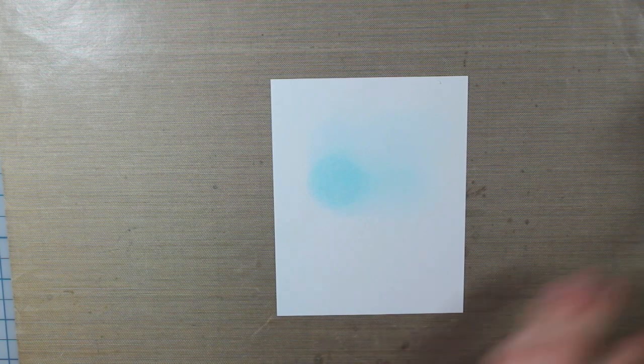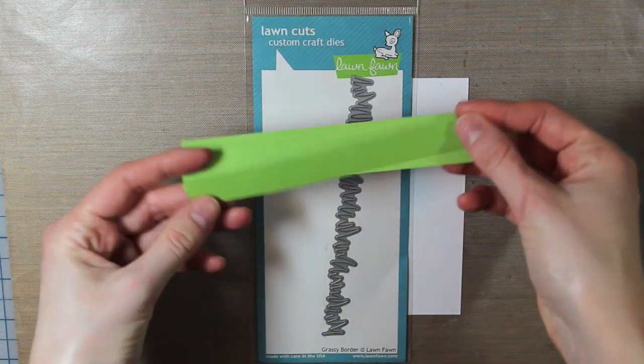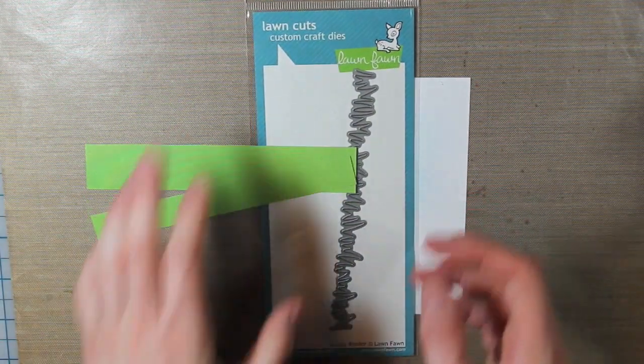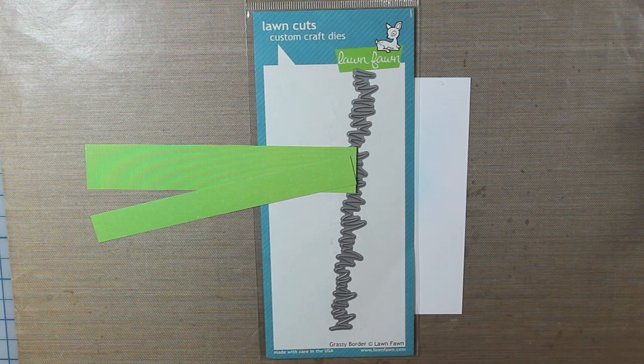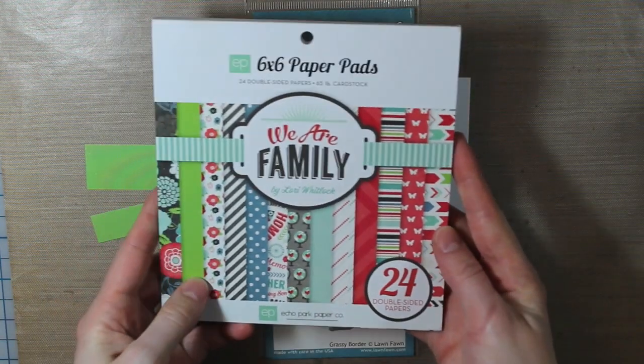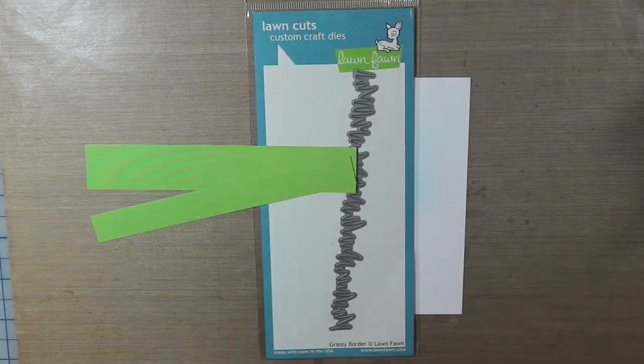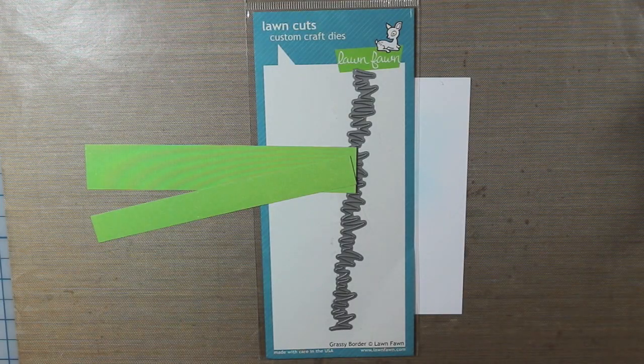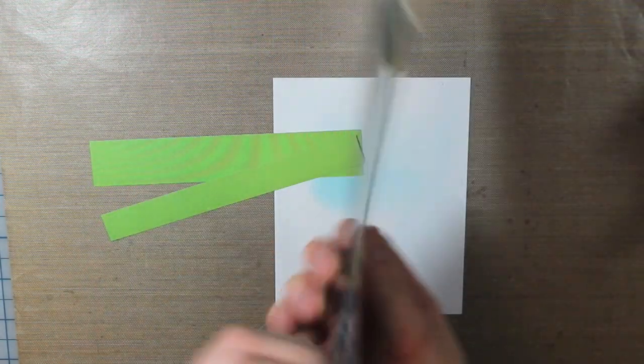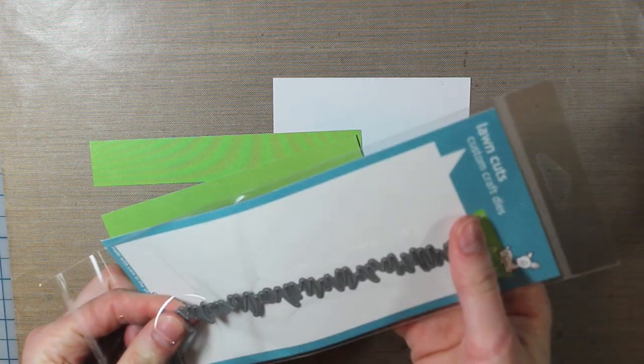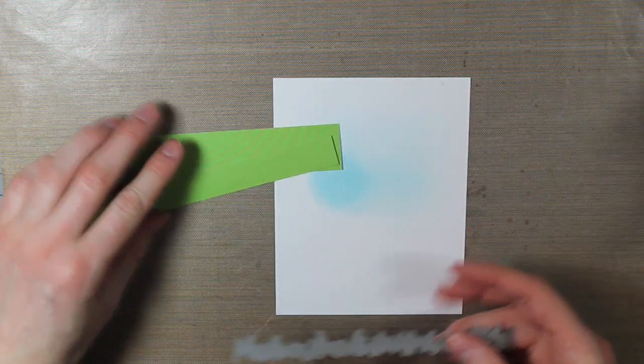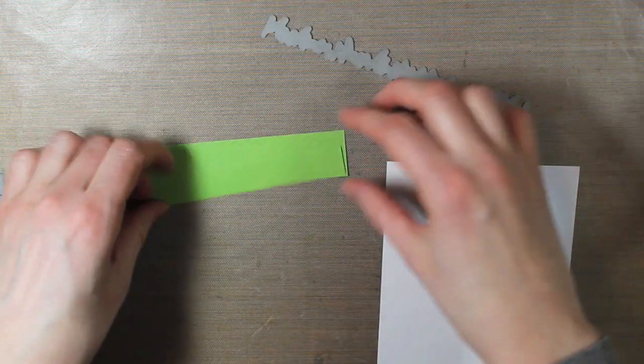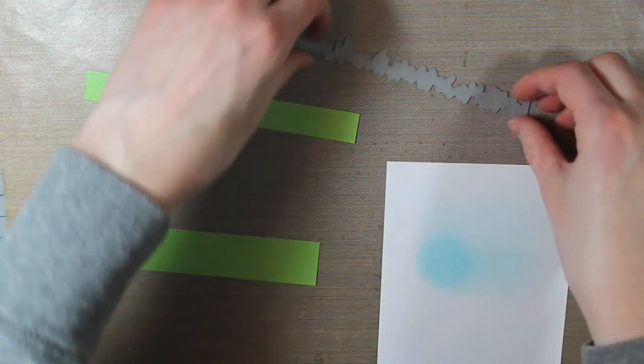So I took a piece of pattern paper, or two strips of pattern paper, from Echo Park We Are Family 6x6 paper pad. I had this left over from a different project. I am going to cut that with the grassy border die from Lawn Fawn. I'll cut both of those strips out with my Cuddle Bug.